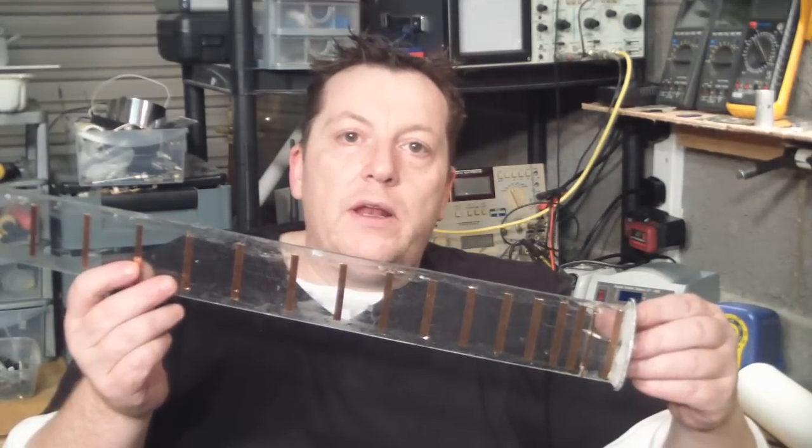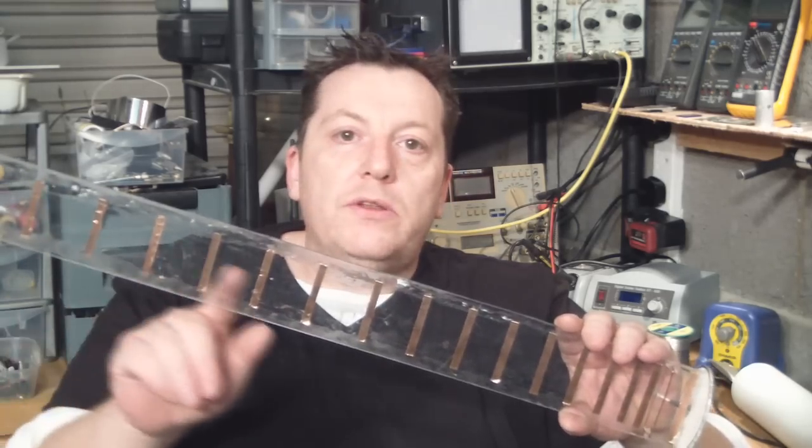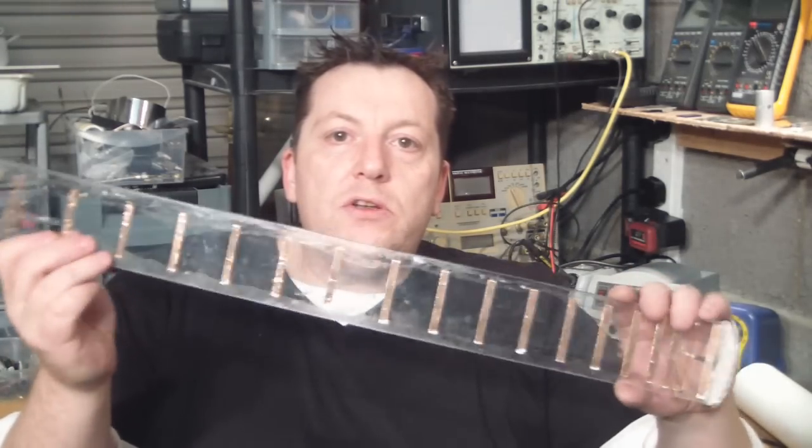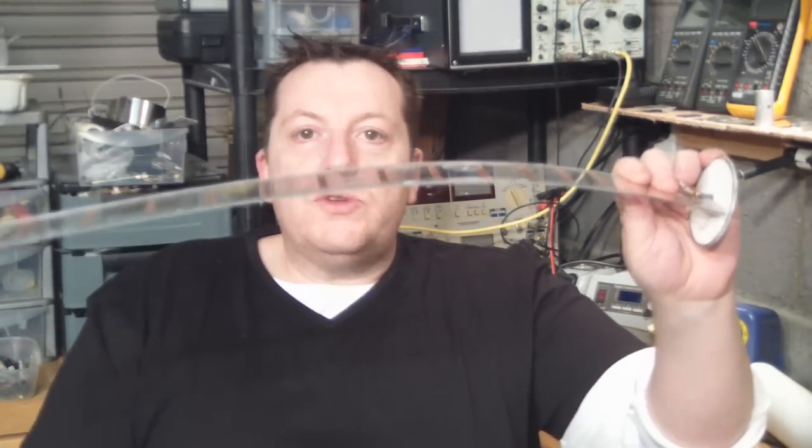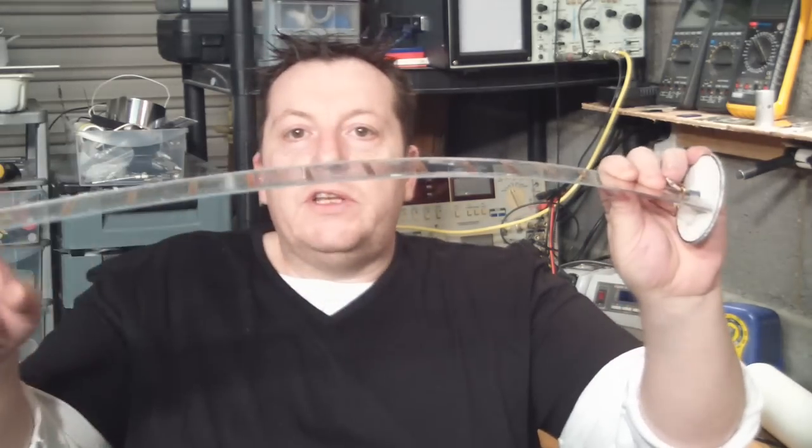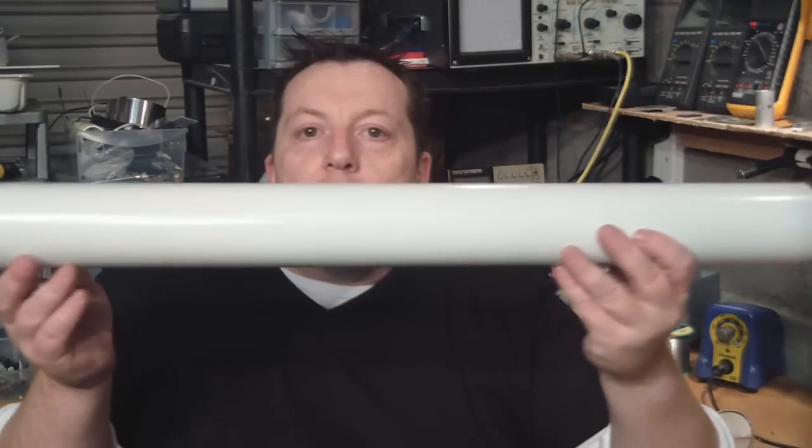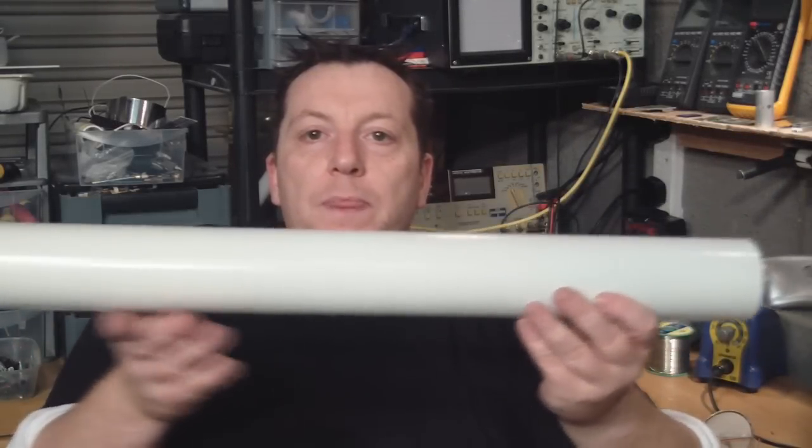Now the only problem with making a larger Yagi antenna using this method of putting the elements on the Perspex is it's quite flexible, it's got no structural integrity. Even if you hold it up to try and keep it level, it obviously sags.